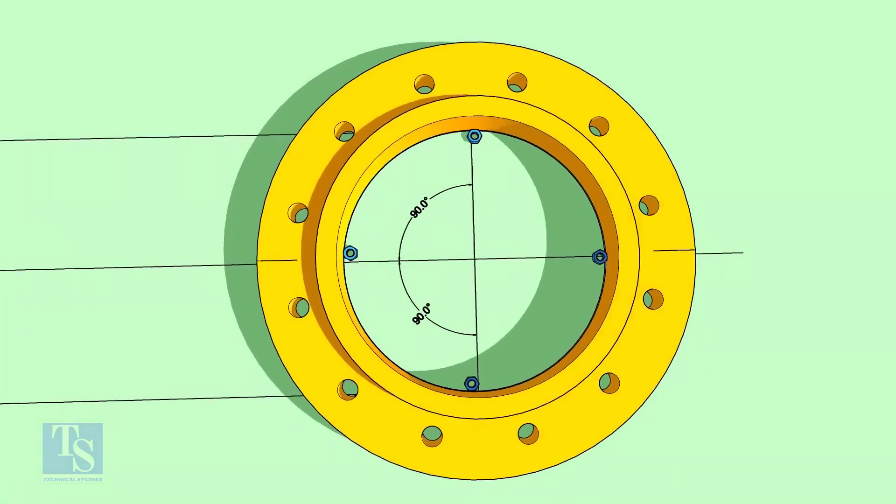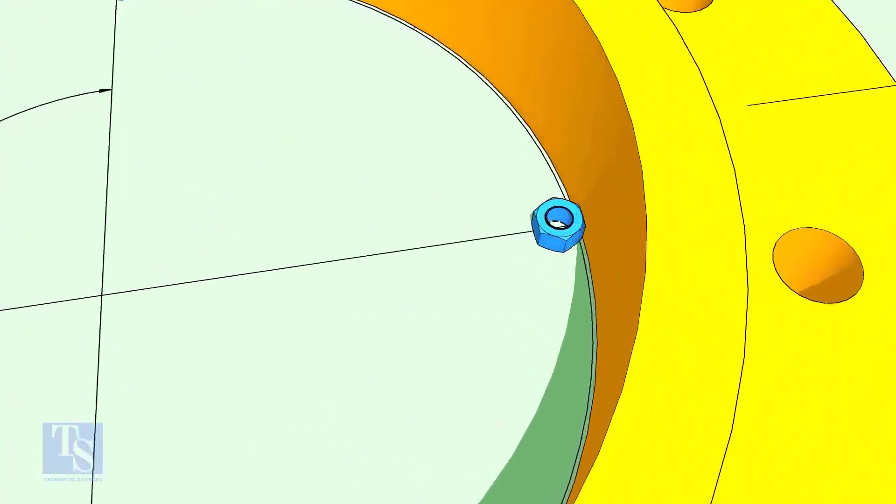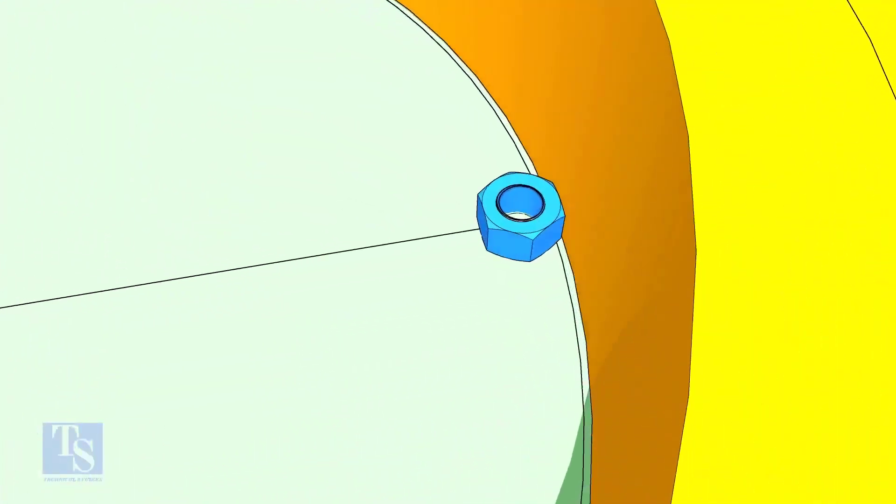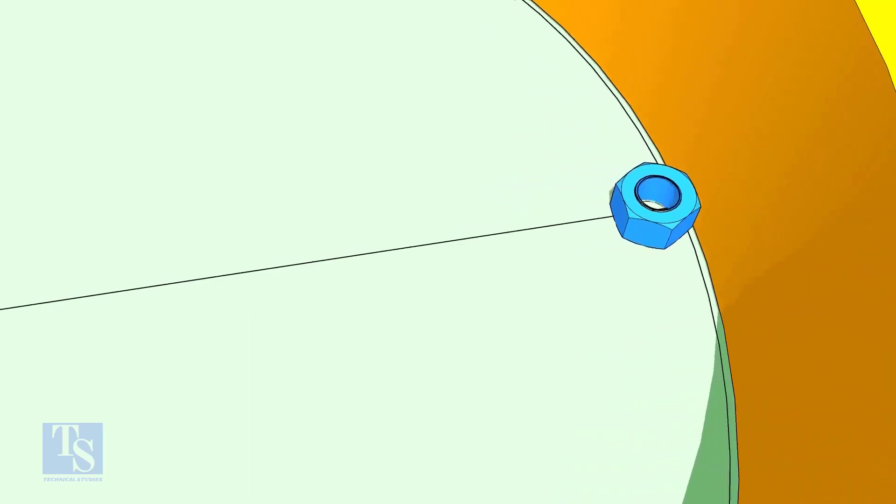Put four nuts in the flange as shown. The thickness of the nut shall be equal to the thickness of the elbow, or as per the weld size given in the drawing.